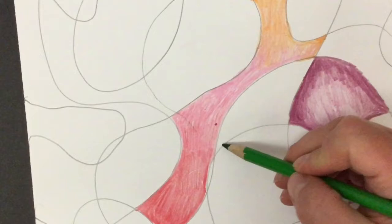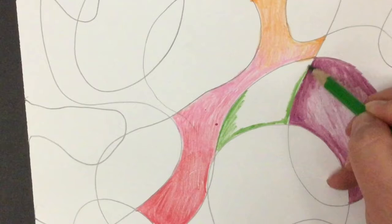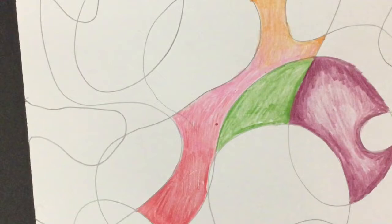And I'm going to put my base layer of green down. And then I'm going to add the shading in after. So I'm not going to go super dark here. Just kind of a base light layer.